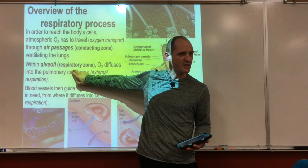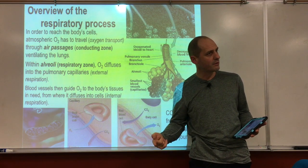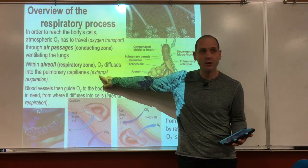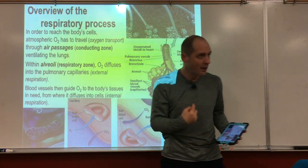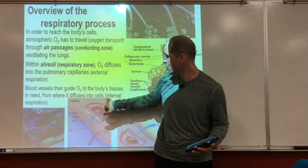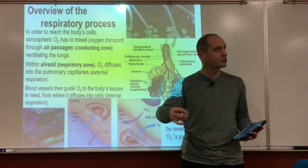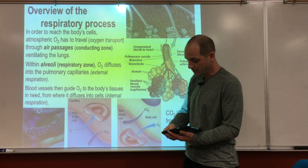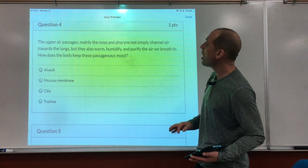The alveoli are the respiratory zone because respiration is when oxygen diffuses from the air into the blood — that's external respiration, going from air to blood from the outside in. When oxygen goes from the blood to the tissue, that is called internal respiration. So your pathway is: oxygen from the air → to the blood → to the tissue.